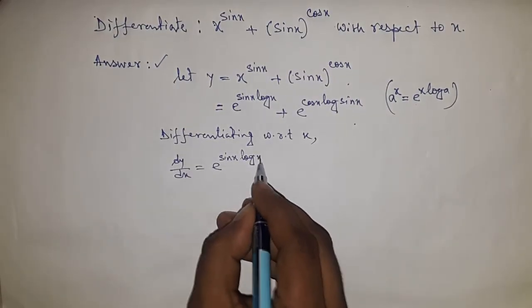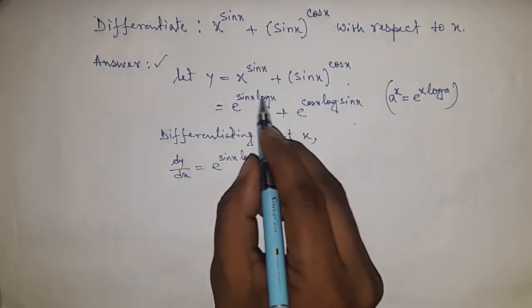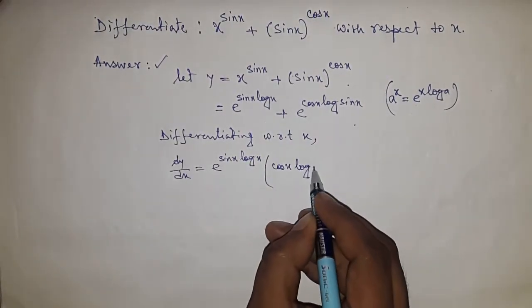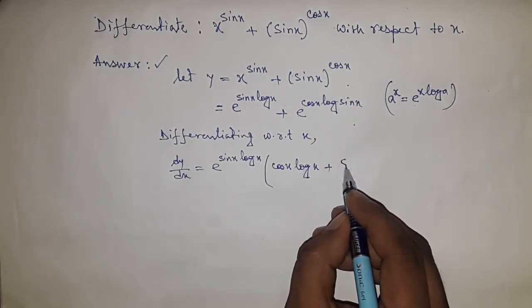So we can write e to the power sine x log x, and here two functions sine x and log x, so derivative of sine x equals cos x and derivative of log x equals 1 by x.